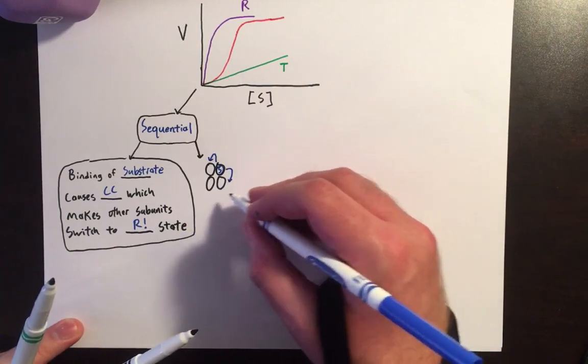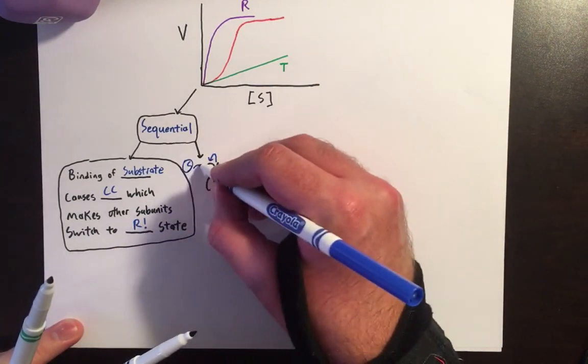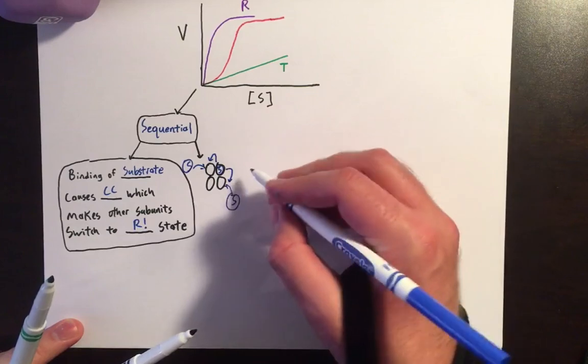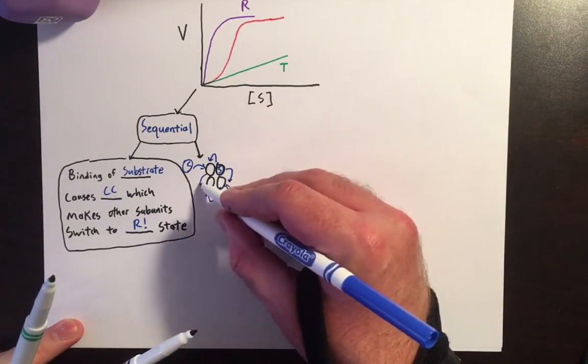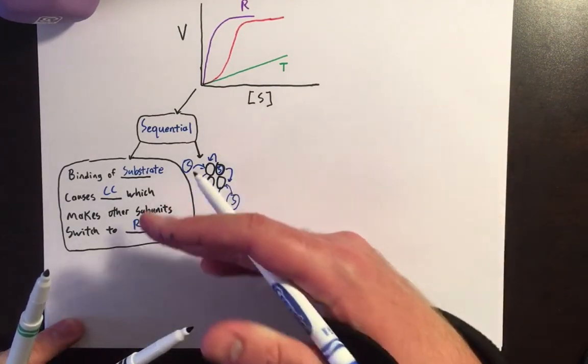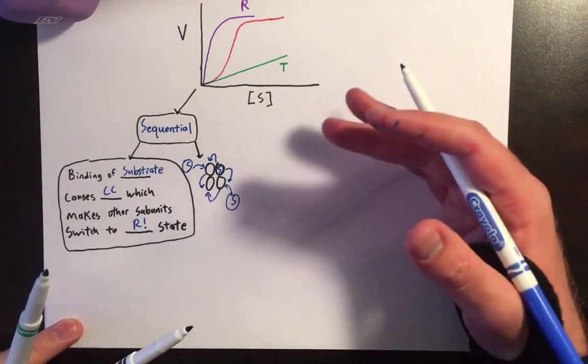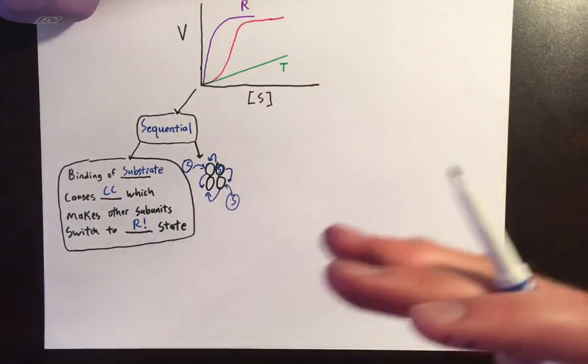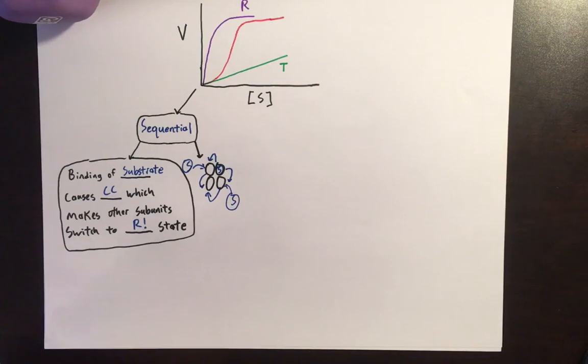This makes them switch to the R-state so that more substrates can bind. And when these substrates bind, this final one undergoes a conformational change which switches it over to the R-state. And this enables it to respond to various amounts of substrate concentration.